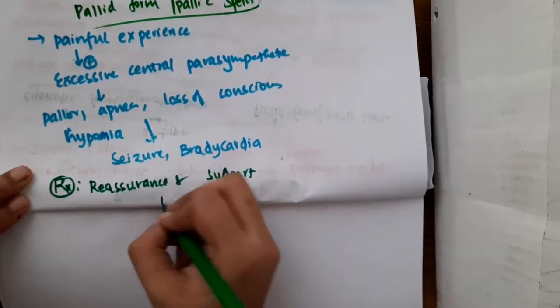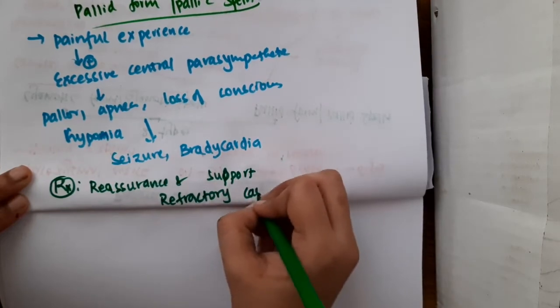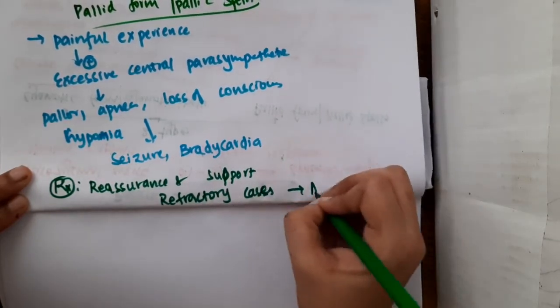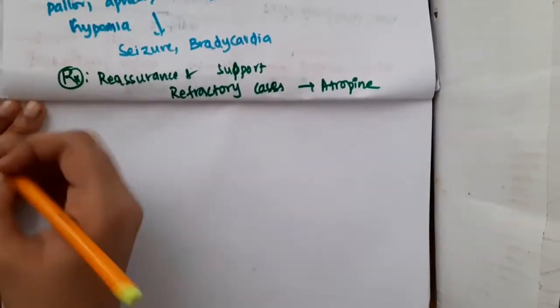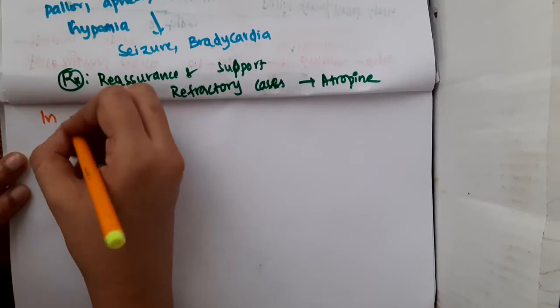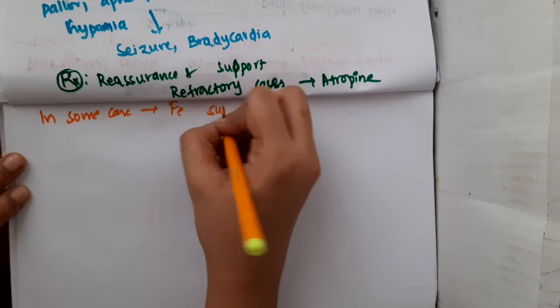Then in refractory cases, if after giving support and reassurance, if it does not resolve then atropine may be used in refractory cases. In some children with breath holding spells, we can even give iron supplementation.